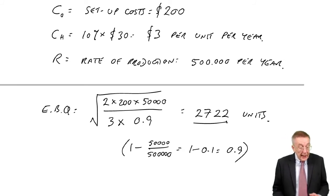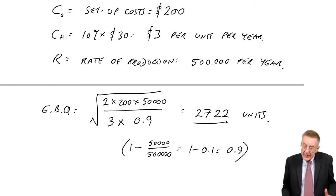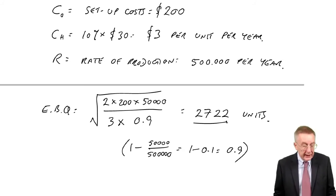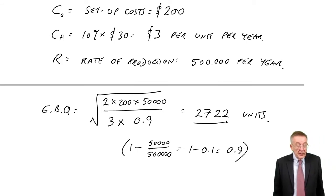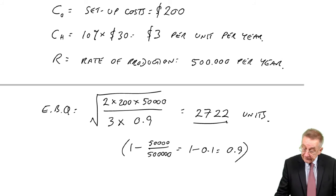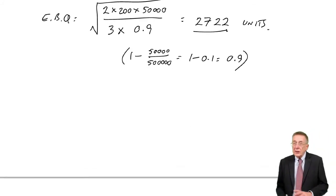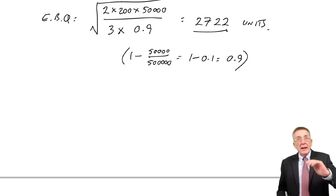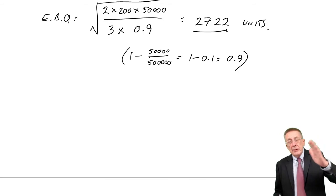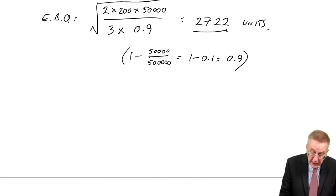The question says, calculate the economic batch quantity. Well, there we are, and that's probably all that will be required. To be safe, though, it said, what will the costs involved be at that quantity? Well, almost like before, but one little bit that just could be worth remembering. We have the reorder cost and the holding cost. The reorder cost, the equivalent, is the setup costs.